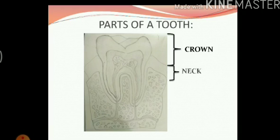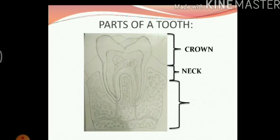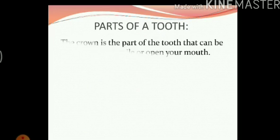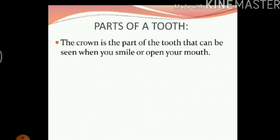In between the crown and the root, there is the part where we can see the outline of our gums. That area is called the neck. So we have three parts: crown, neck and root. The crown is the part of the tooth that can be seen when you smile or open your mouth — the part with the white enamel is your crown.